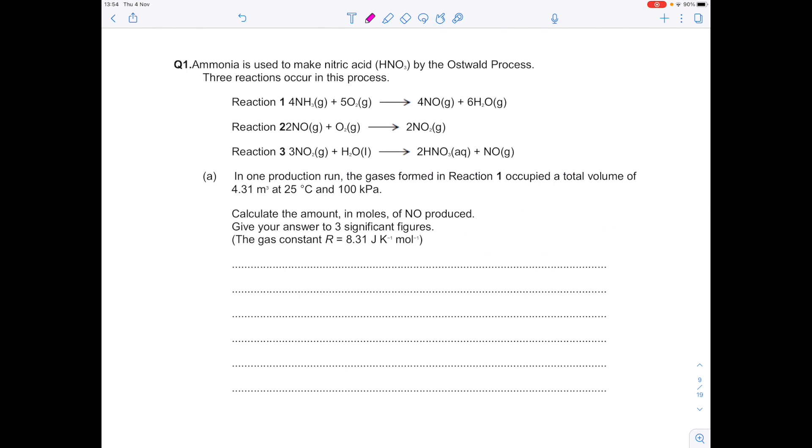Ammonia is used to make nitric acid, HNO3, by the Ostwald process. Three reactions occur in the process. In one production run, the gases formed in reaction 1 occupy the total volume of 4.31 meters cubed at 25 degrees Celsius, 100 kPa. Calculate the amount in moles of NO produced. Give the answer to 3 sig fig. And there's our value for R. So hopefully this is screaming the ideal gas equation at you. So our pressure, remember that needs to be in pascals. Times that by 1,000 automatically. Our volume is 4.31 meters cubed. That's fine. We're after the number of moles. R is 8.31 and our temperature needs to be in Kelvin. So add 25 degrees Celsius to 273 to get 298 Kelvin.